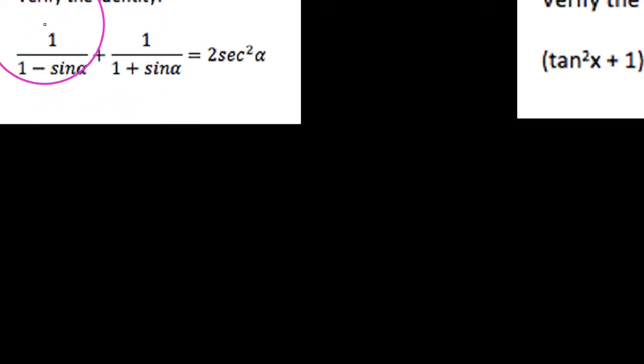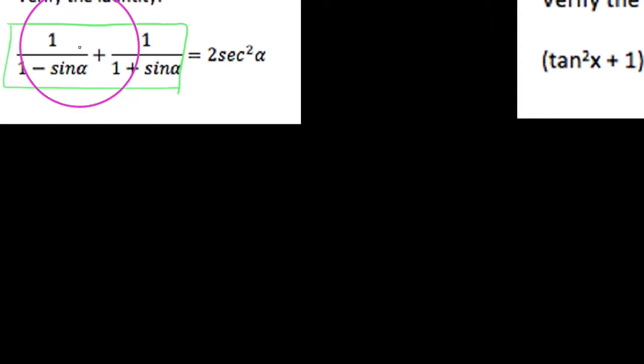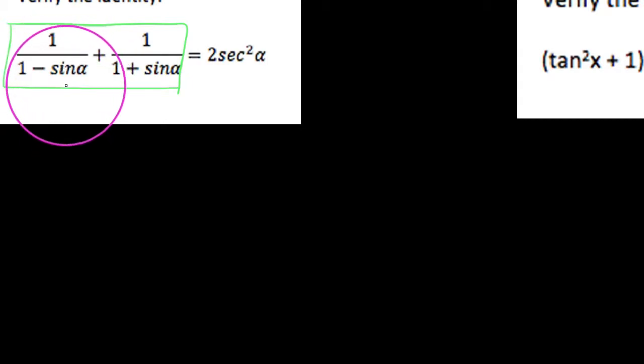We do have two fractions here. In terms of which side we want to work on, we're probably going to want to work on the left side because it is the more complicated of the two. But the fact is we're looking at something that already has everything in terms of sines and cosines — even though there are no cosines — and we couldn't turn, say, a secant into a one over cosine, or a sine squared into a one minus cosine squared, so we're going to have to work with what we have.